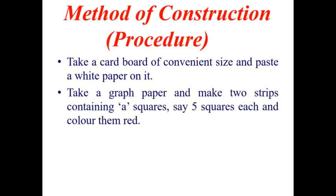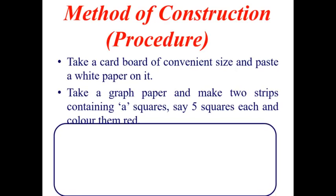Then, take a graph paper and make two strips containing A squares. Here, I have taken A is equal to 5. So, 5 squares in each strip are taken and color them red. So, like this, you have to take two strips of 5 squares each.